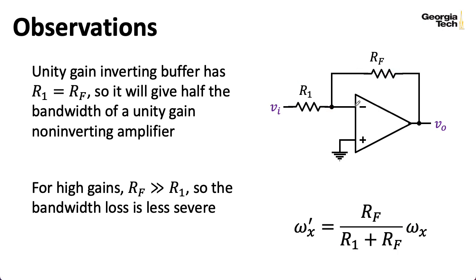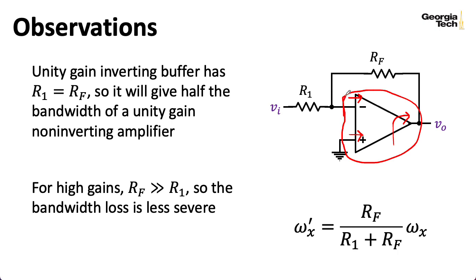We've focused on non-ideal effects in terms of non-infinite gain over a range of frequencies. There are other effects we could talk about — for instance, non-infinite input impedance, in which case there would be some current flowing through the terminals, or non-zero output impedance. But as far as designing with op amps goes, the frequency-dependent gain is by far the most important effect. Usually, you don't explicitly take non-ideal input and output impedances into account in the initial design process — you either build the circuit and test it, or simulate it and tweak values. I personally don't find those formulas to be very illuminating, so I won't get into them here.